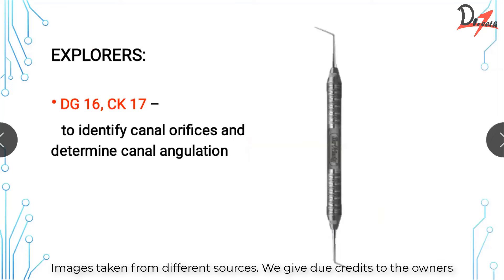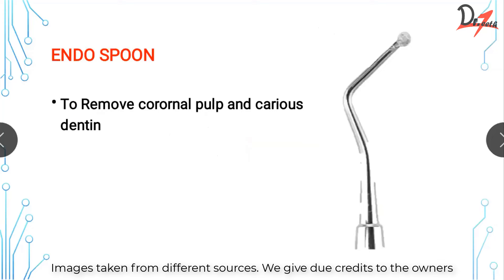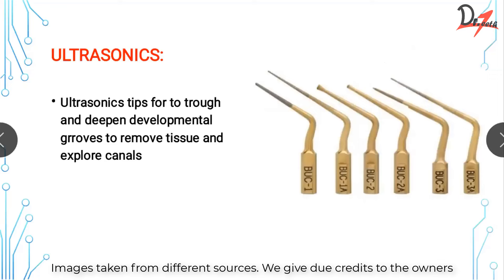The most common explorers used are the DG-16 and CK-17. The DG-16 explorer is a must in your kit — it's used to find the canal orifice and determine canal angulation. The endospoon excavator is used to remove coronal pulp and carious dentin; its shape allows you to excavate caries and remove whatever amount of decay you need.